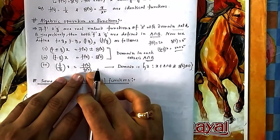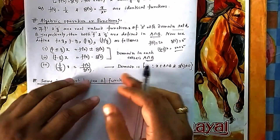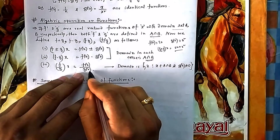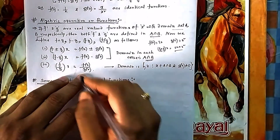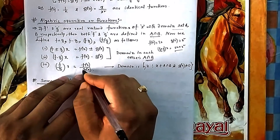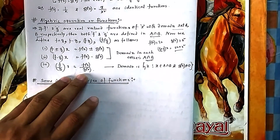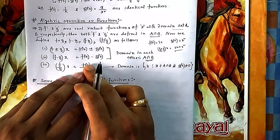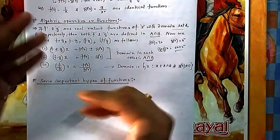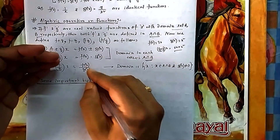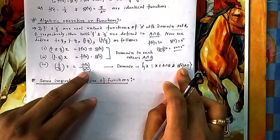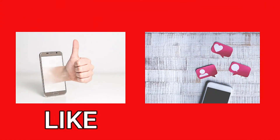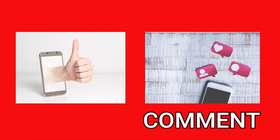In addition and product of functions, the domain is the common area where both functions are defined. For division f/g, there is one additional condition: g(x) must not be equal to zero, since division by zero is undefined. So the domain of f/g is the common domain excluding all x where g(x) = 0.